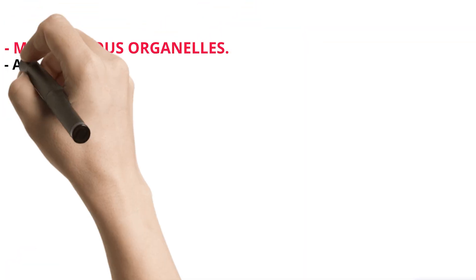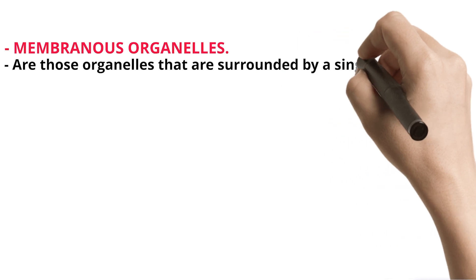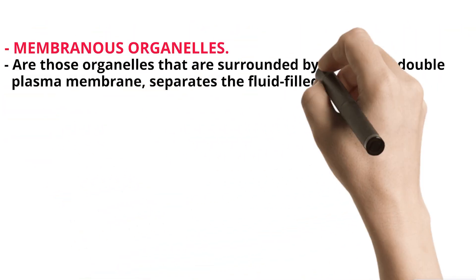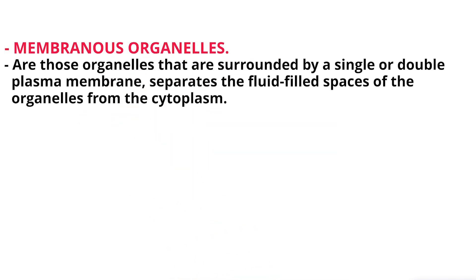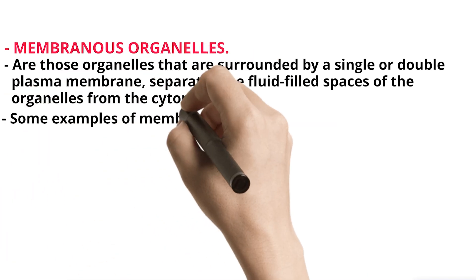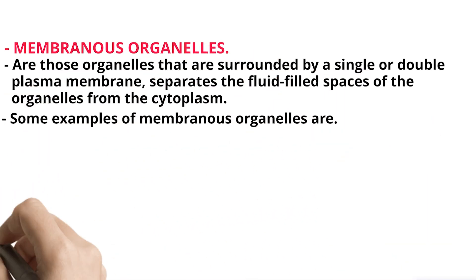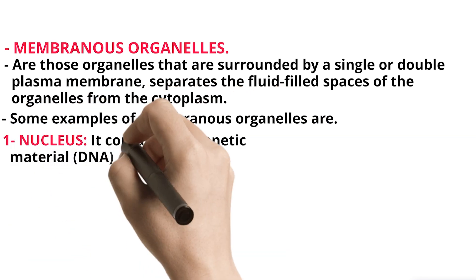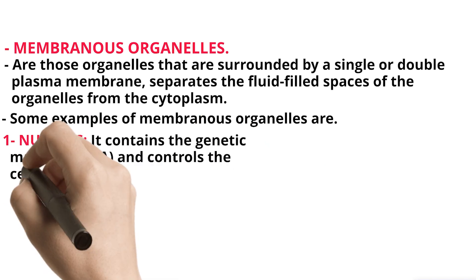Membranous organelles are those organelles that are surrounded by a single or double plasma membrane, separating the fluid-filled spaces of the organelles from the cytoplasm. Some examples of membranous organelles are: 1. Nucleus. It contains the genetic material, DNA, and controls the cellular activities.